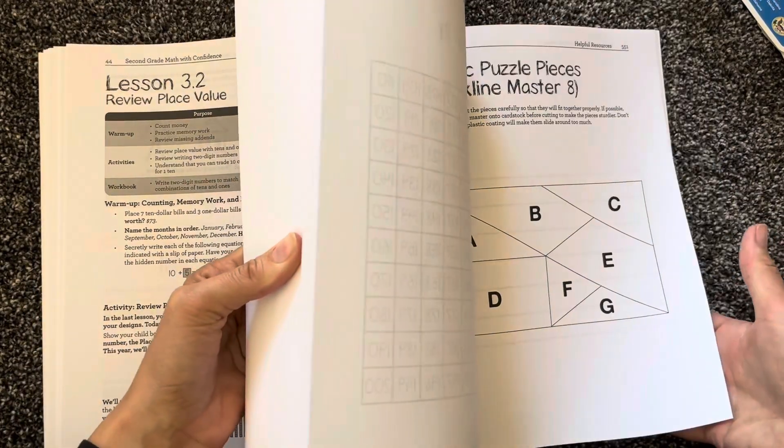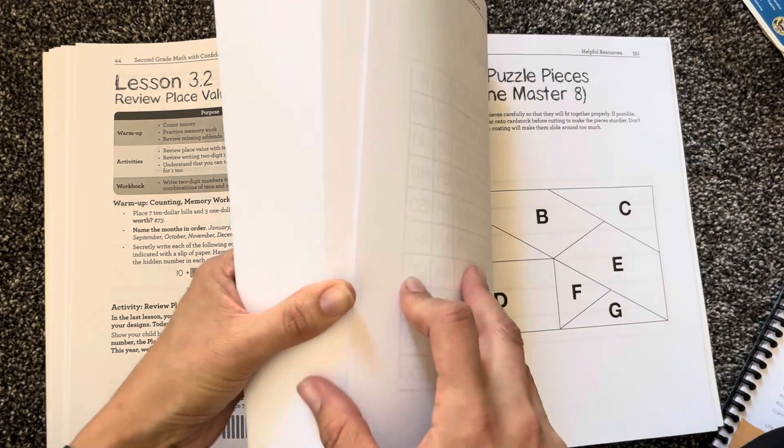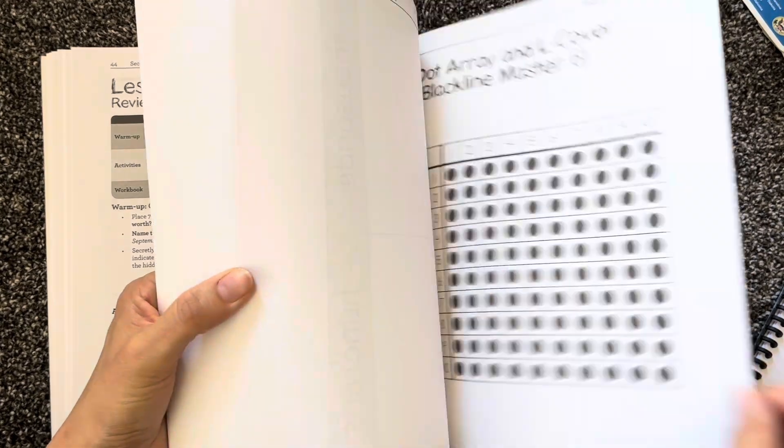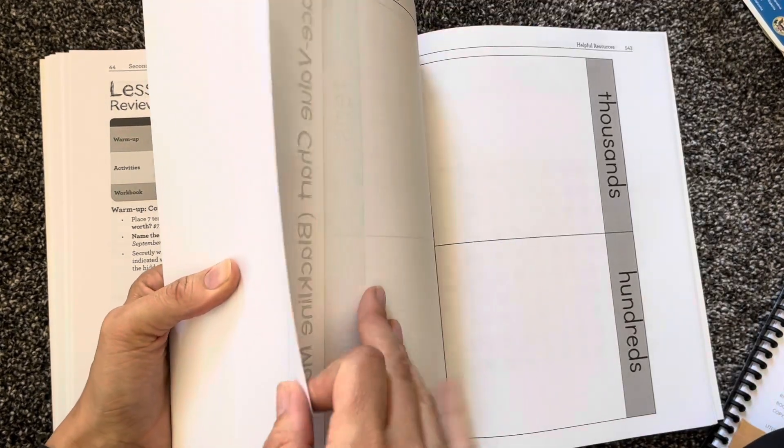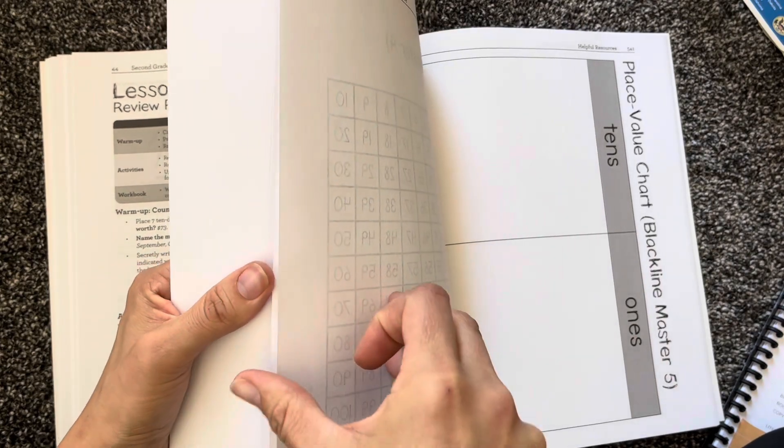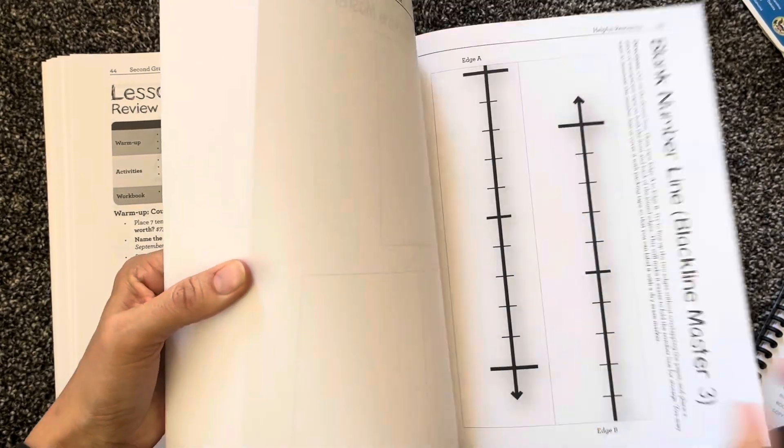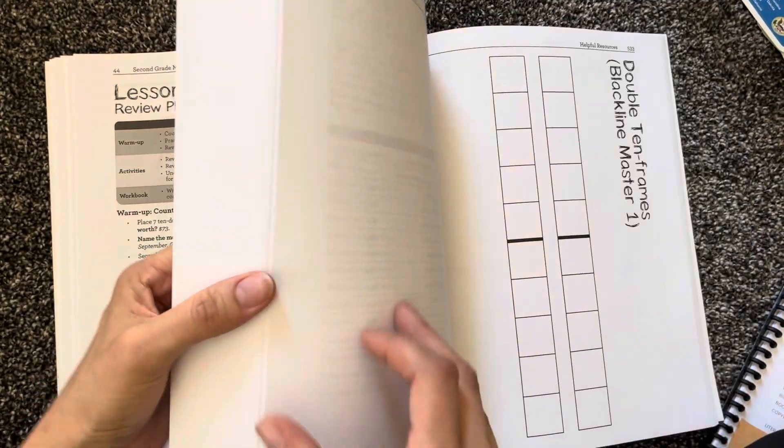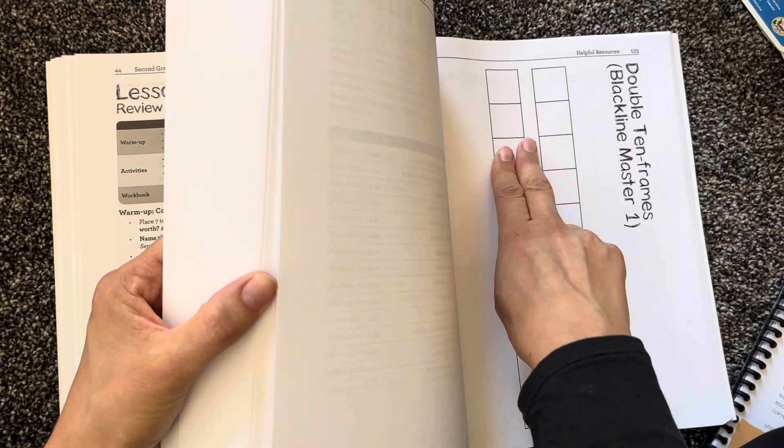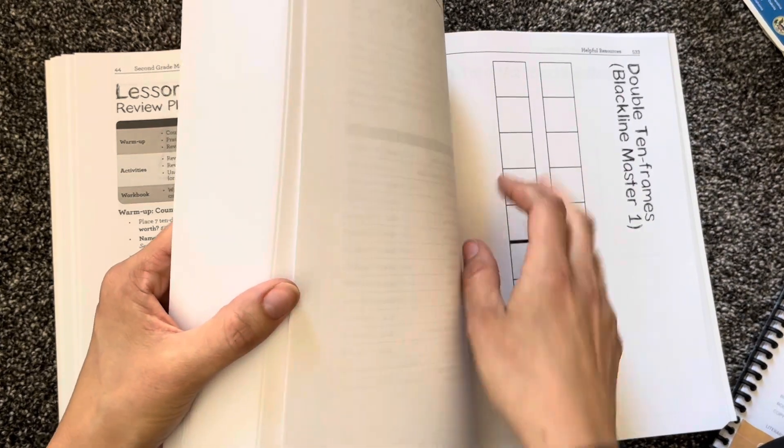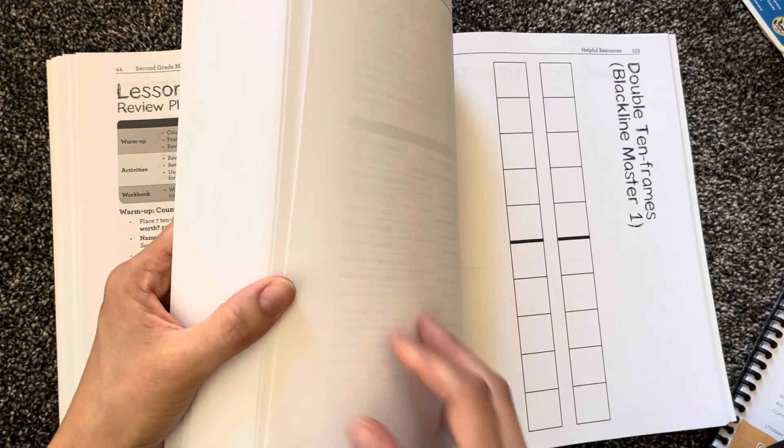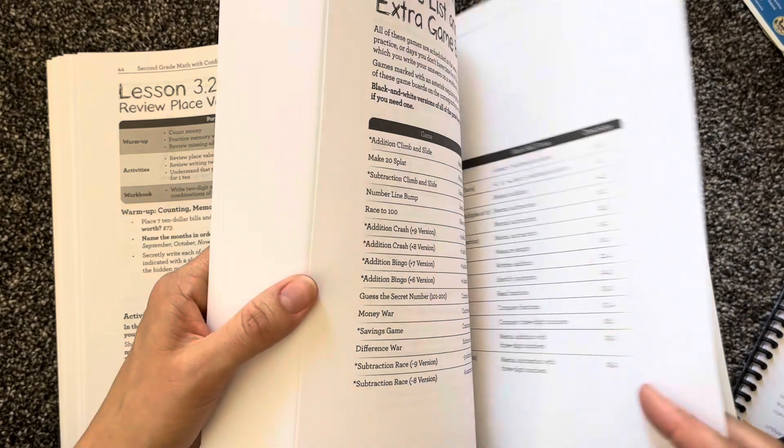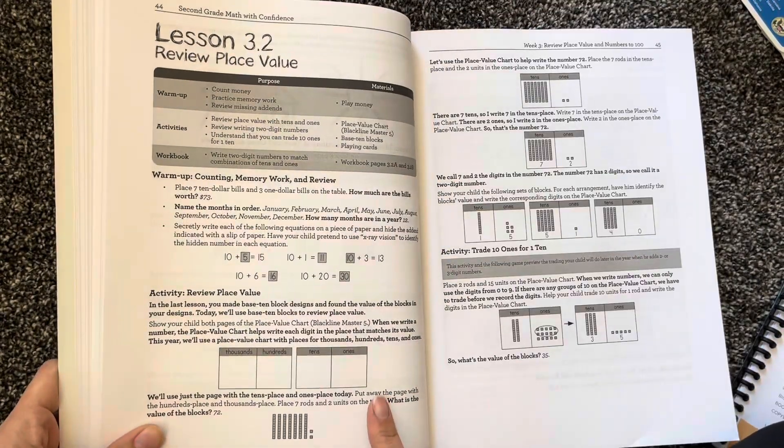I will show you the resources back here. You can make copies of any of these puzzle pieces, hundreds chart, thousands, hundreds, tens, ones. So you can use what she has back here - number line, part-part-total mat. That gets used a lot. And then these 10 frames get used a lot. So I would go ahead and either laminate these pages or make copies of them and stick them in a binder because you don't want to have to grab them mid-lesson from the back.